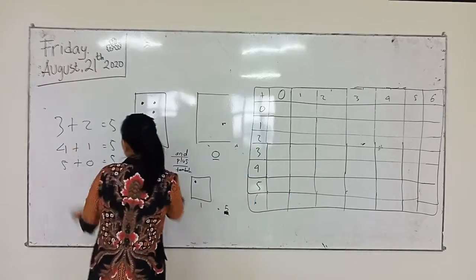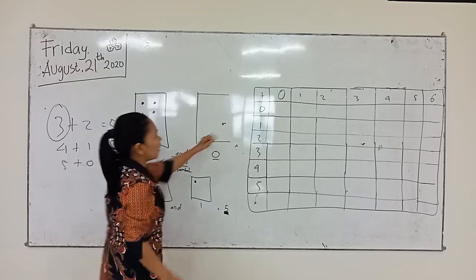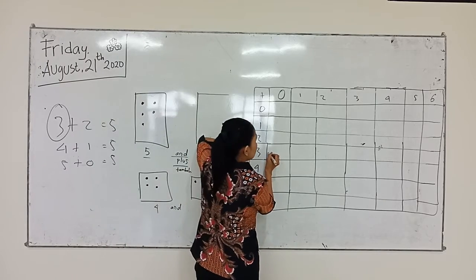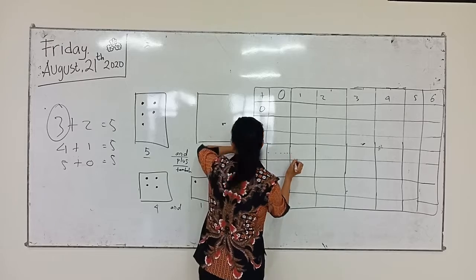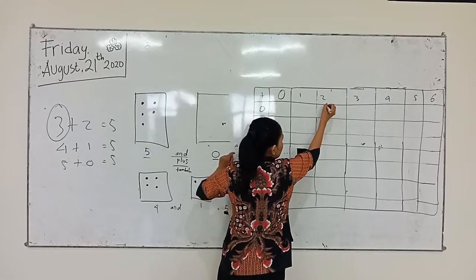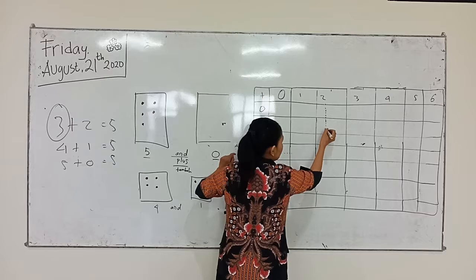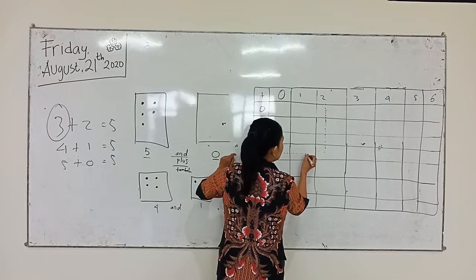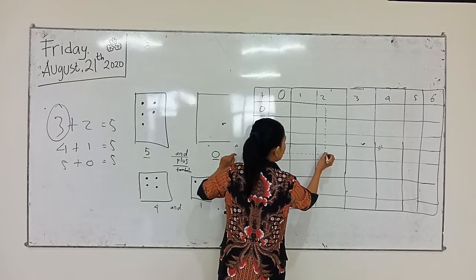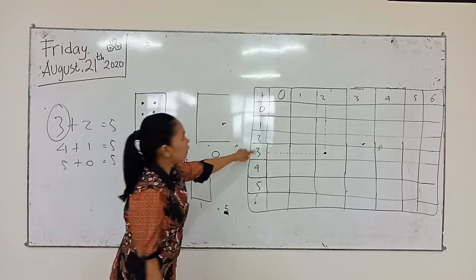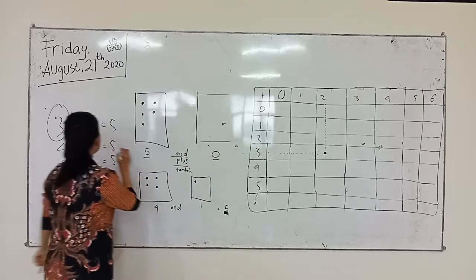Here is 3 — we draw lines: 1, 2, 3. And here is 2 — we draw 2. So we connect 3 and 2 like this. Then 4 and 1: 1, 2, 3, 4 — that is 4, and 1. This is 4, this is 1. We draw the lines like this to connect them. Then we continue.